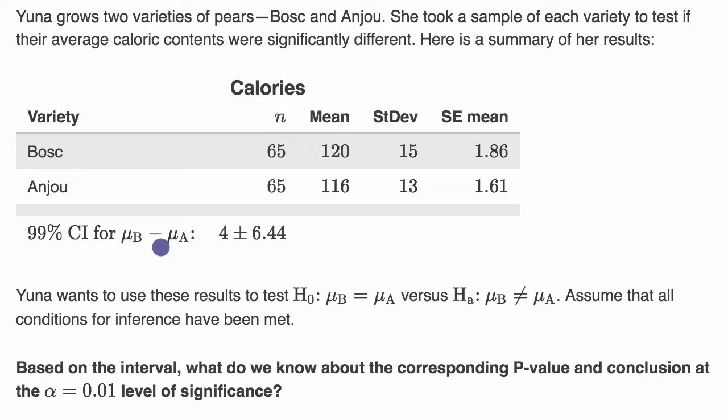Yuna wants to use these results to test her null hypothesis, that the mean caloric content is the same, versus her alternative hypothesis, that they are different. Assume that all conditions for inference have been met. Based on the interval, what do we know about the corresponding p-value and conclusion at the alpha equals 0.01 level of significance?